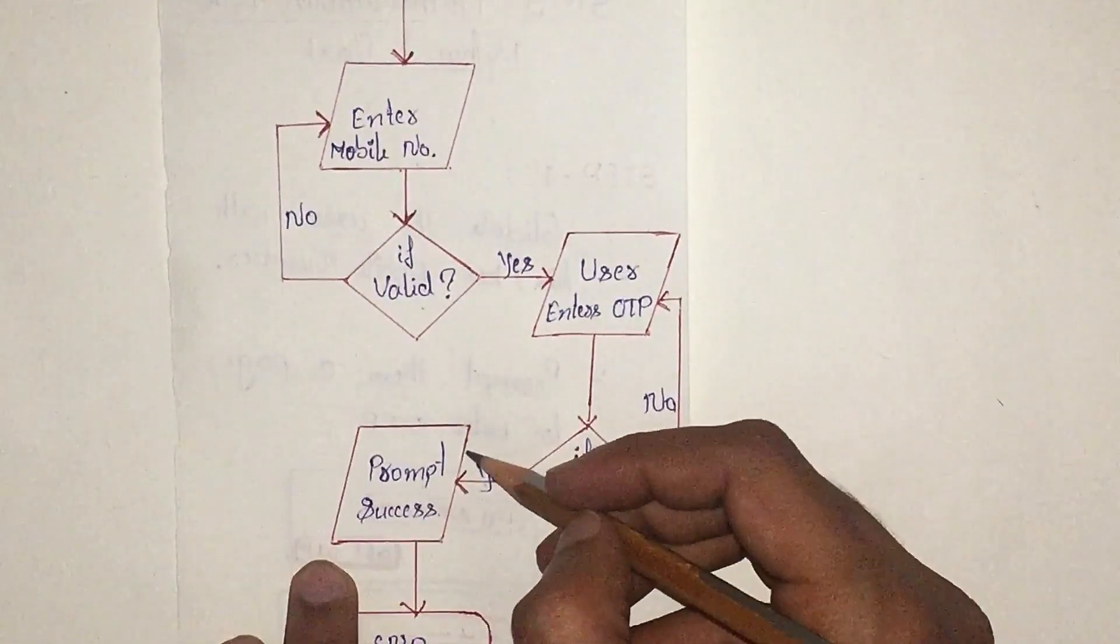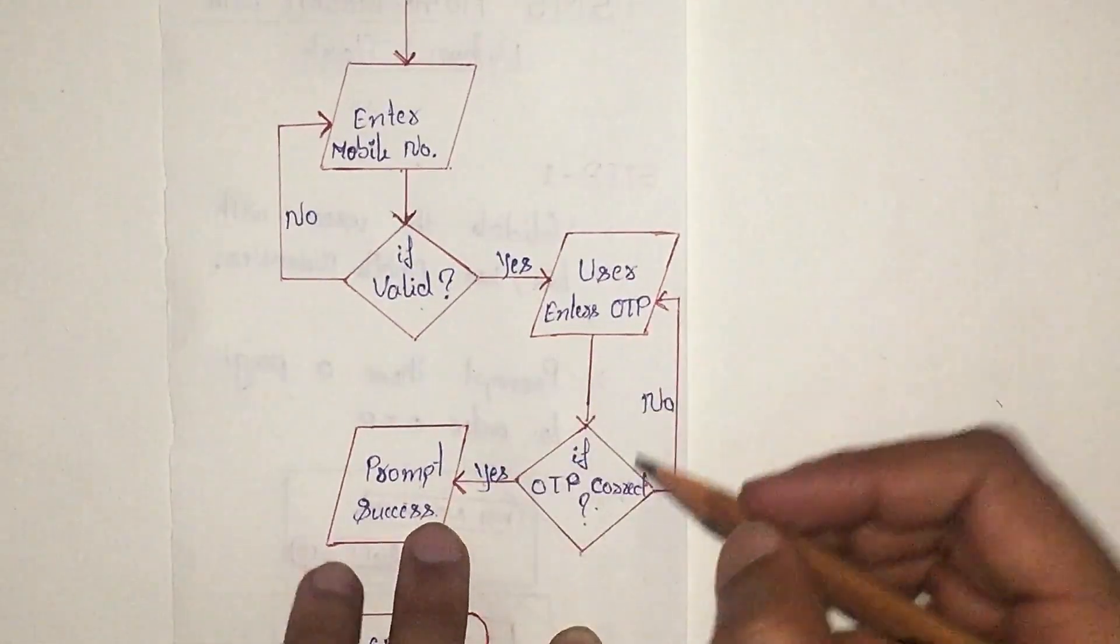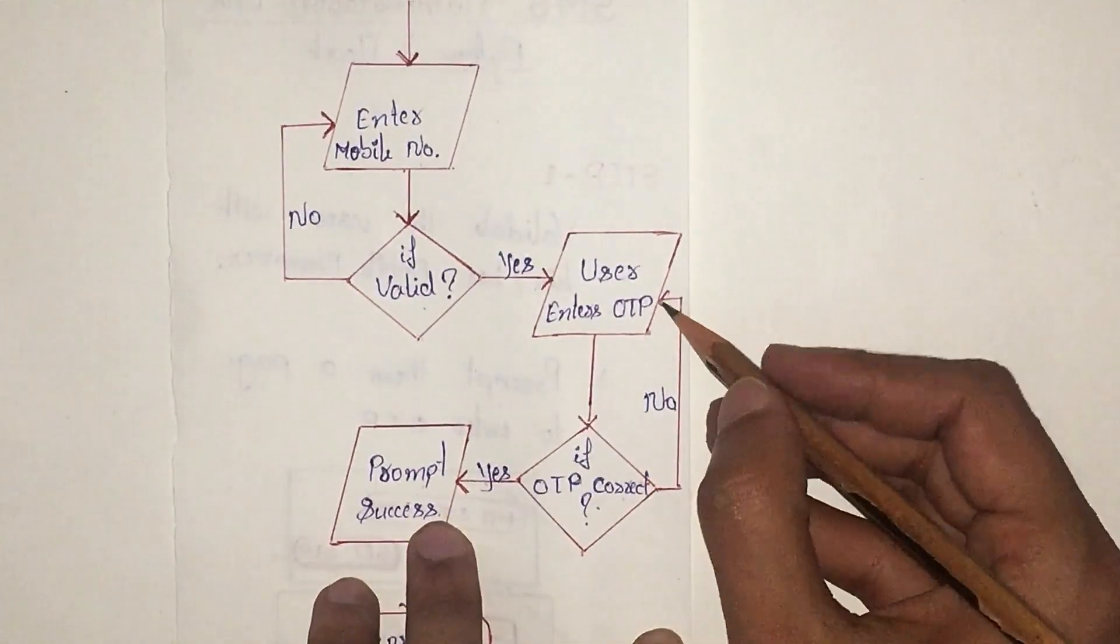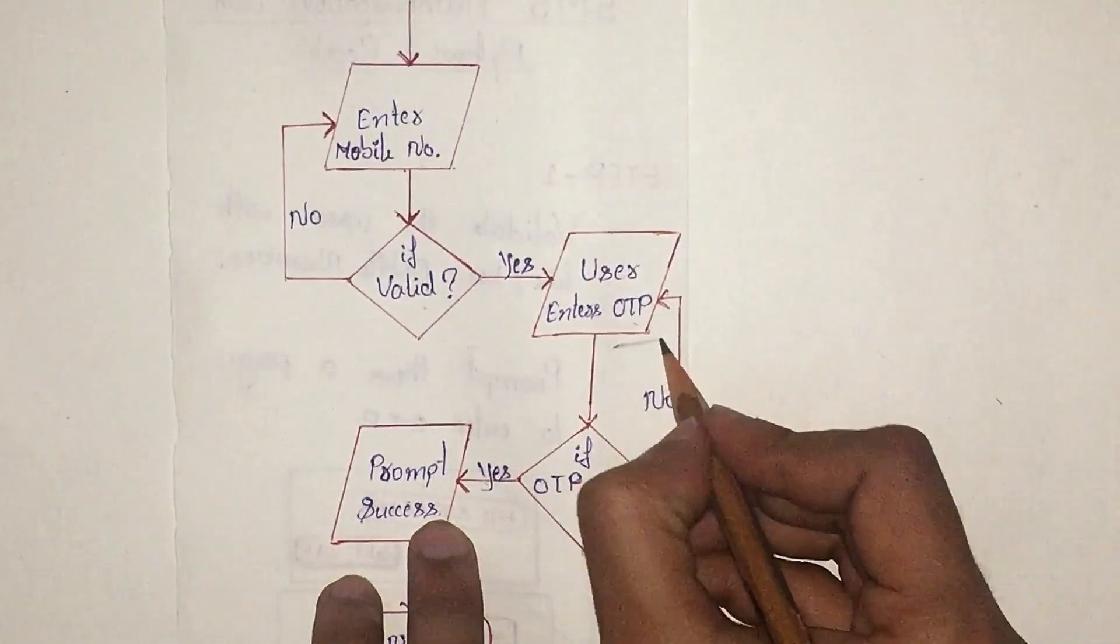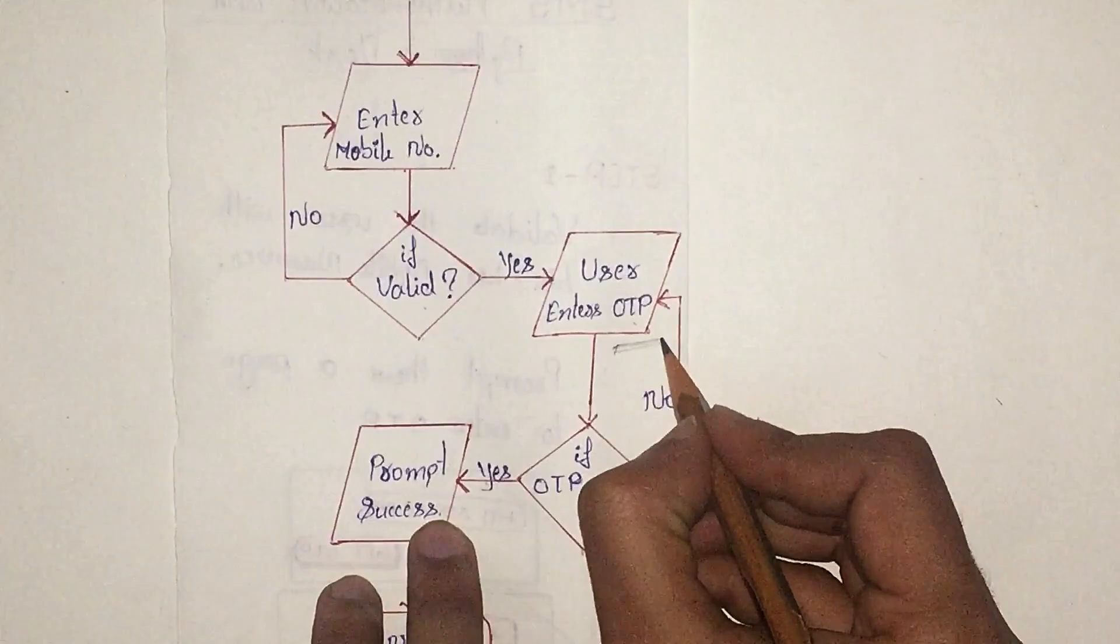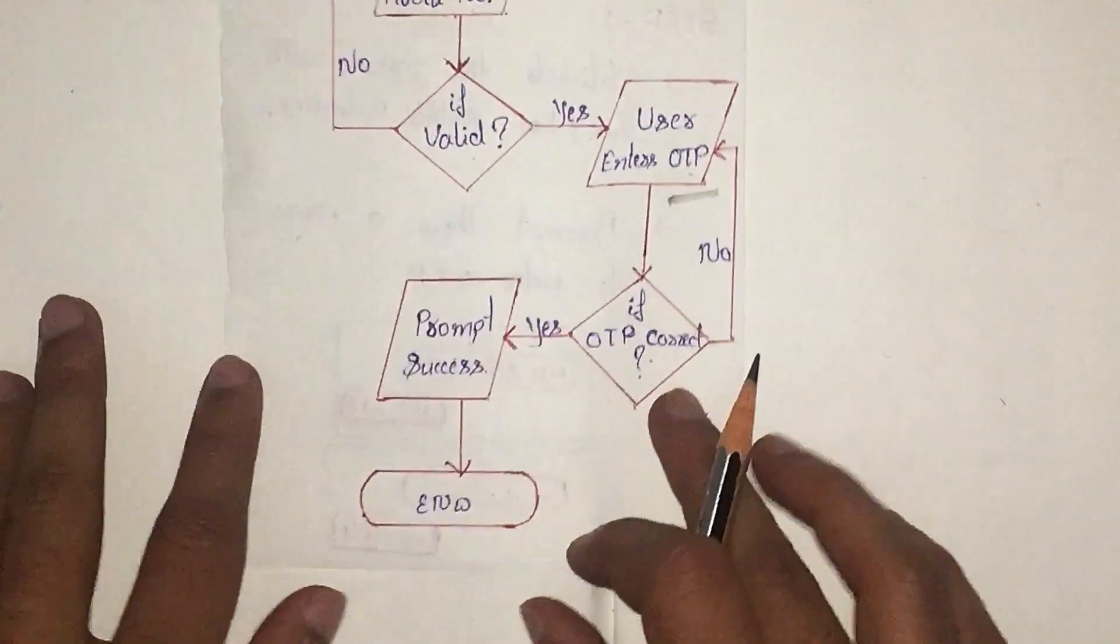You can prompt that page to the end user. Else, prompt back again to enter the OTP again, correct OTP again. You can give a resend OTP if the session has expired. I'm going to talk much about the session expiry thing.